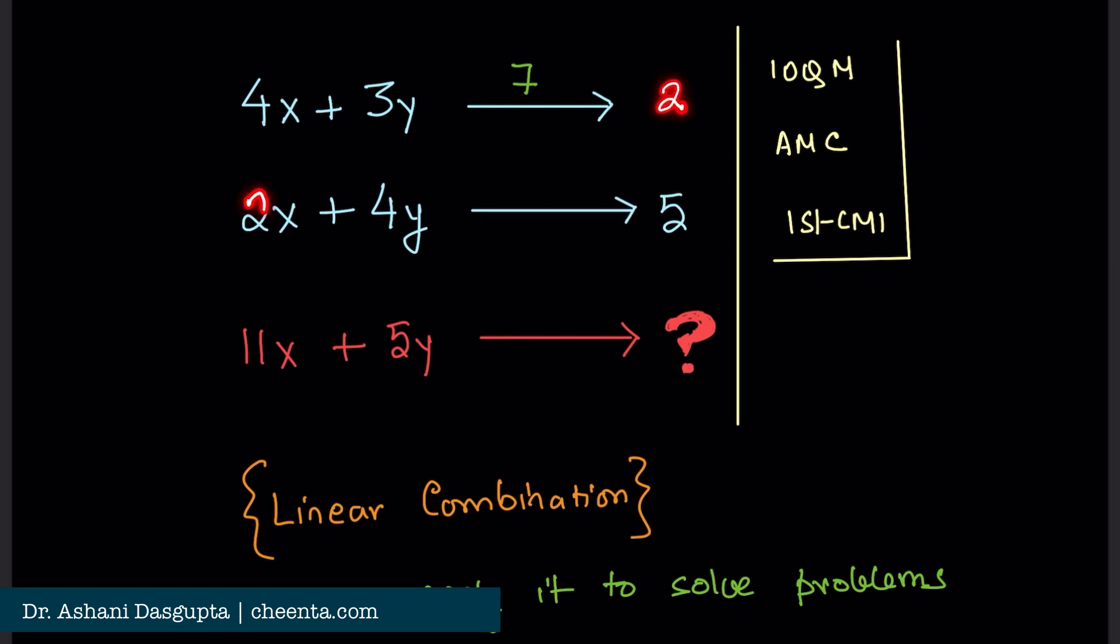And when you divide 2x plus 4y by 7, the remainder is 5. This is given data. Now you want to find out what is the remainder when 11x plus 5y is divided by 7.